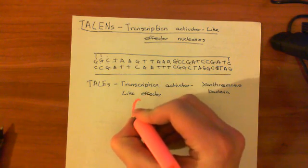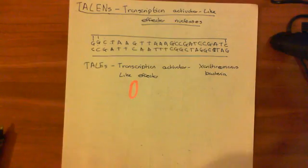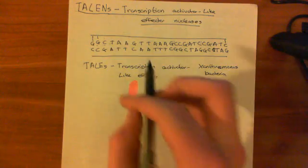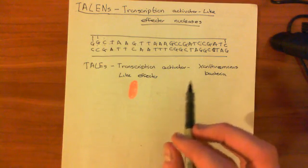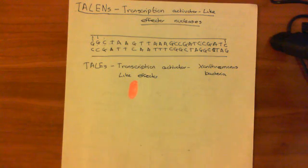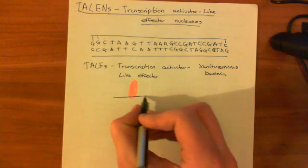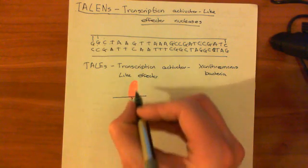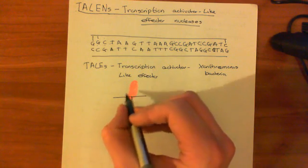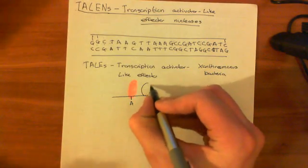We are getting very precise proteins here, because this TALE — this Transcription Activator-Like Effector — is going to bind not just to a codon. In the previous video on zinc finger nucleases, zinc fingers were binding to whole codons. But now these Transcription Activator-Like Effectors bind to a single specific nucleotide, such as adenine or thymine each having its own specific TALE.